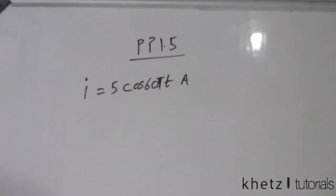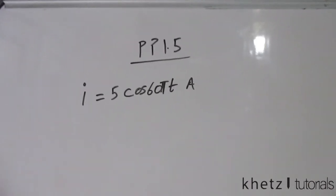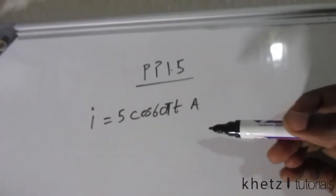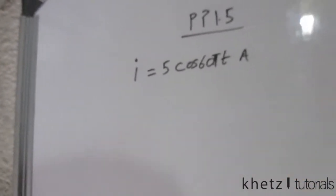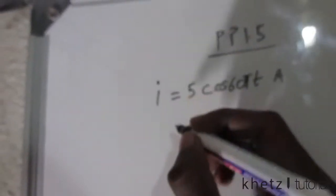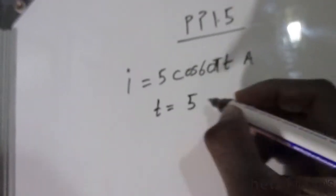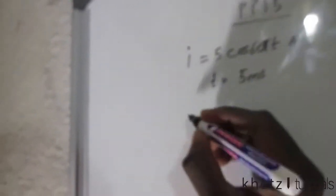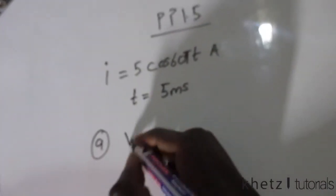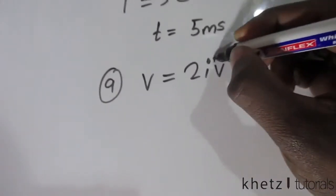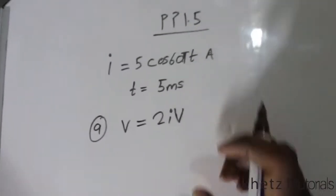Welcome back to CAS Tutorials. In this video we are going to be doing practice problem 1.5. Given this current, we are asked to find the power delivered to an element at time equals to 5 ms when, this is part A, when the voltage is 2i volts. So we are asked to find power.